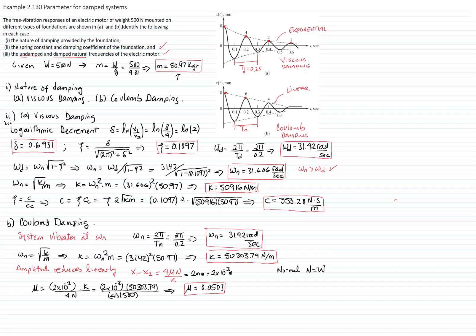This completes the solution of the whole problem. We analyzed two different types of foundation: one with viscous damping and the other with Coulomb damping. The key distinction is that with viscous damping the system vibrates at the damped frequency, while with dry friction (Coulomb) damping the system vibrates at its natural frequency.